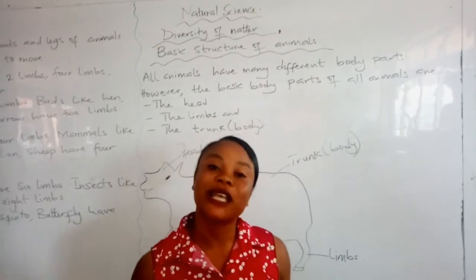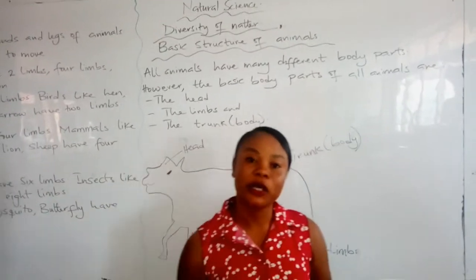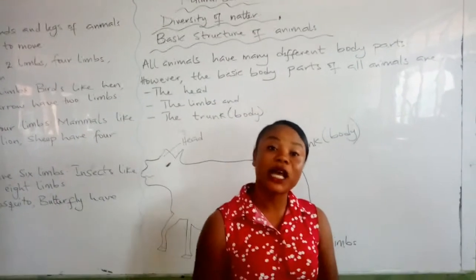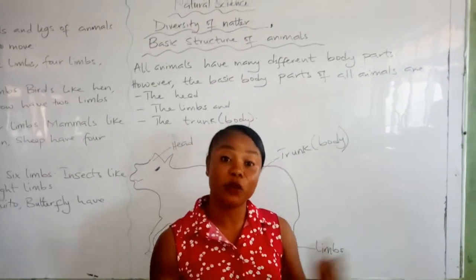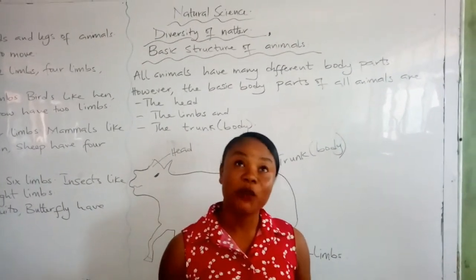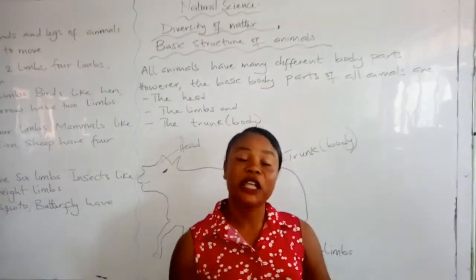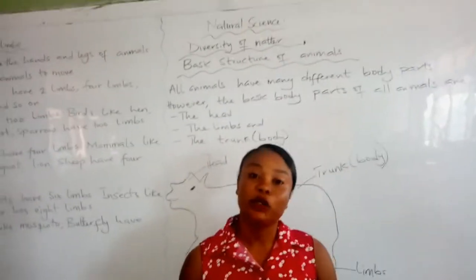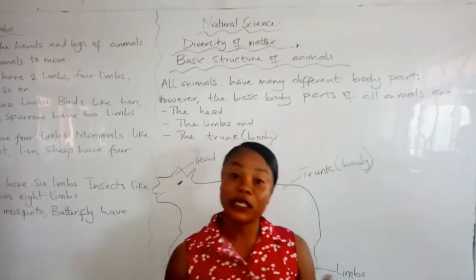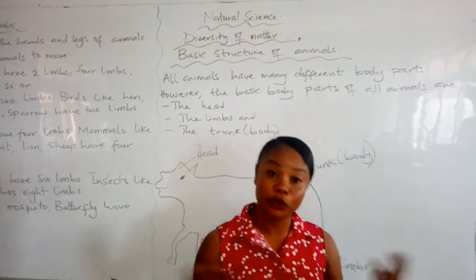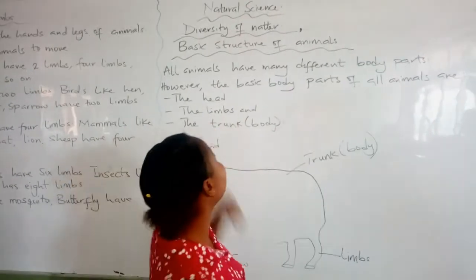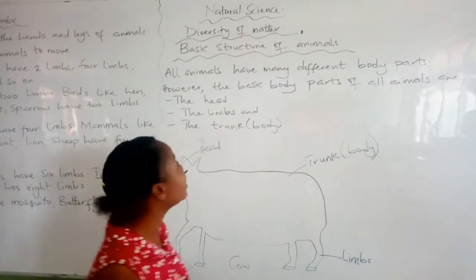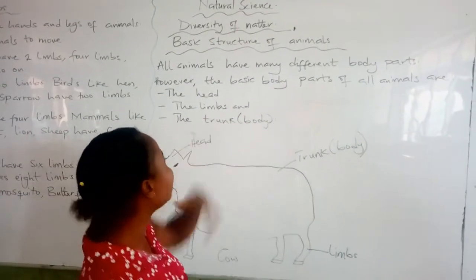We also talked about aquatic animals. Aquatic animals are animals which live in the water, and we gave examples like shark, dolphin, and sylvia and so on. Today we are going to talk about the basic structure of animals.